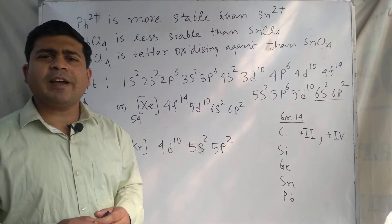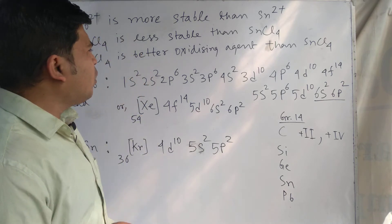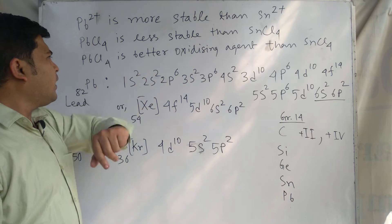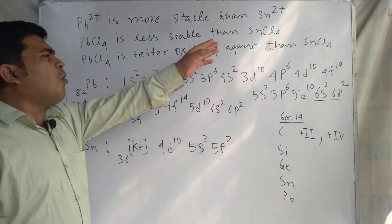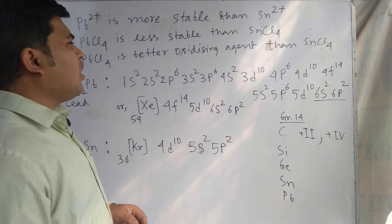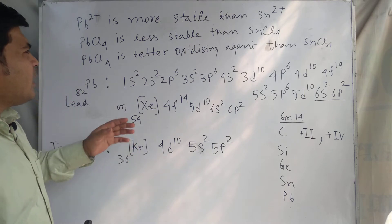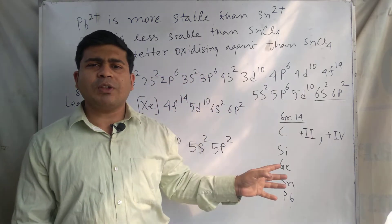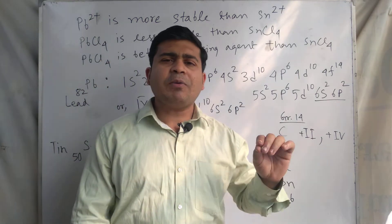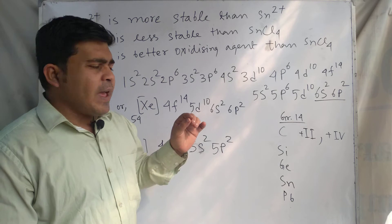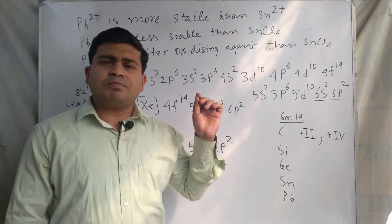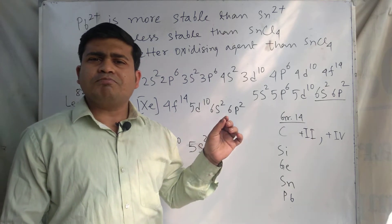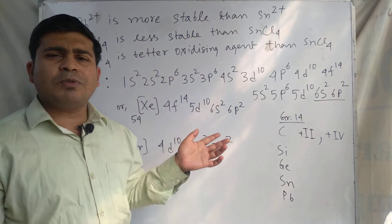In this video lecture we discuss the answers to three questions: why Pb²⁺ is more stable than Sn²⁺, why PbCl₄ is more stable than SnCl₄, and why PbCl₄ is a better oxidizing agent than SnCl₄. These three questions share the same answer, so watch this video lecture to the end to understand.